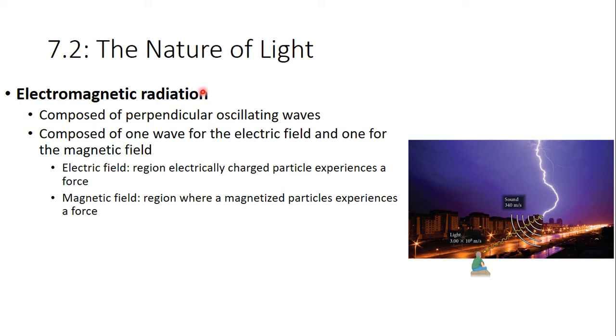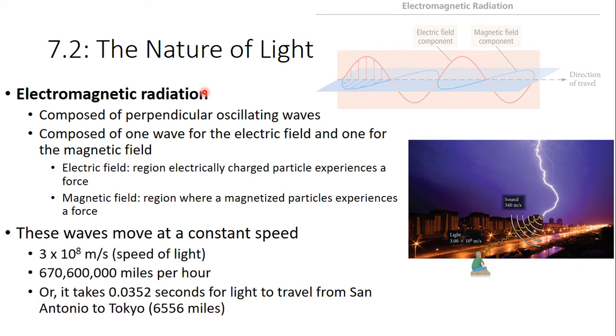In this lecture, we're going to learn about how light behaves like a wave. Light is made out of perpendicular oscillating waves. Let me pull up the picture here. So light, when it travels, has two different waves. Oscillating just means repeating, and perpendicular is two waves at 90 degree angles.